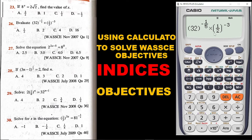Now because there is no variable — no letter — in this expression, there is no need to click shift and solve. Once there is no variable, simply hit straight away with the equal sign. So we click on it and we are getting 4. Going through the possible answers, the right answer is option C. We are done. This is a WAEC question from 2007.